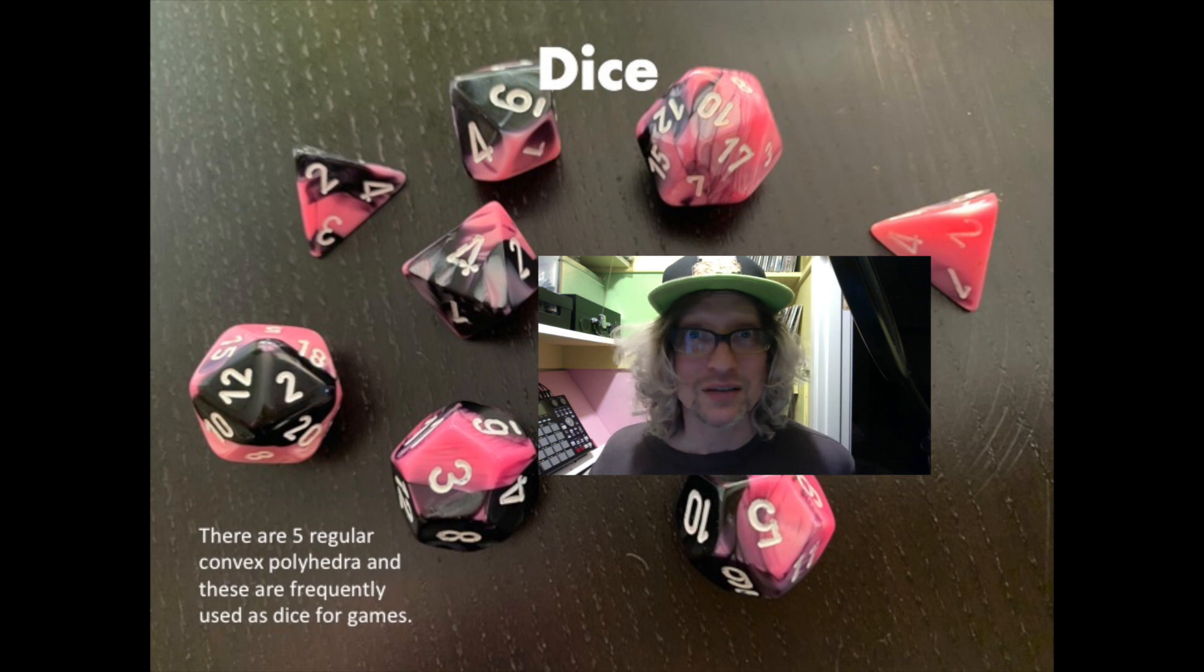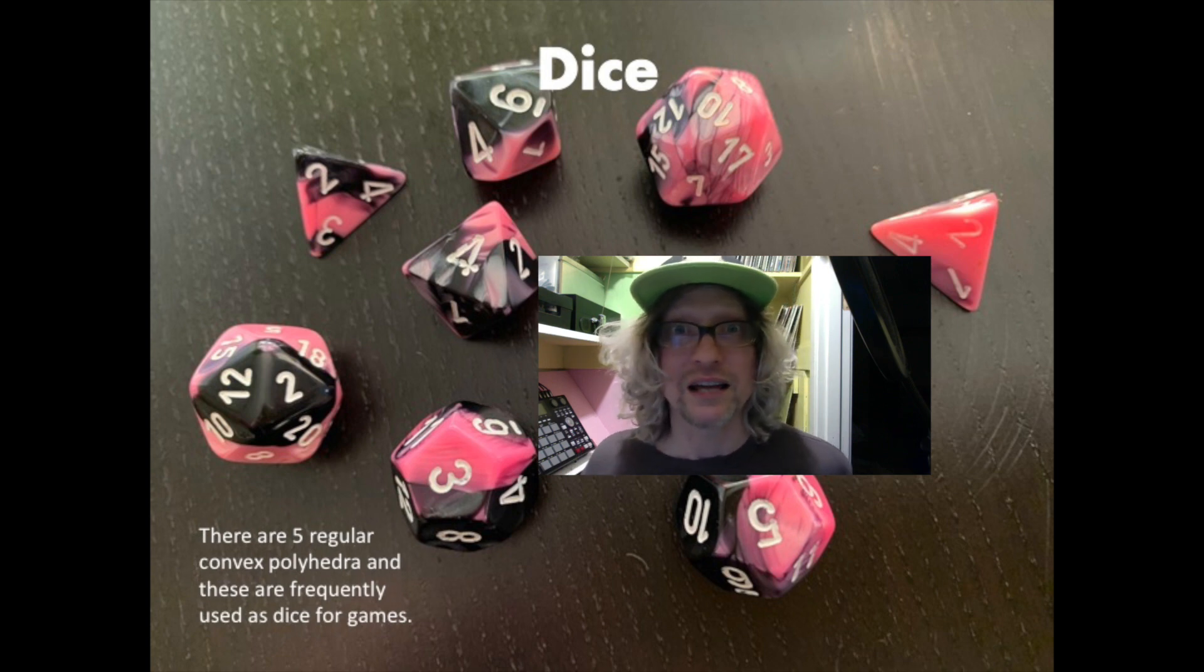You may know somebody who plays Dungeons and Dragons and you might have seen them rolling these really cool dice, like 20-sided dice, 12-sided dice, 10-sided dice. Well, those are more examples of three dimensional solids that you see outside of a math class. I think we've seen enough examples of where we're going to see these three dimensional solids. Let's move into the vocabulary section.